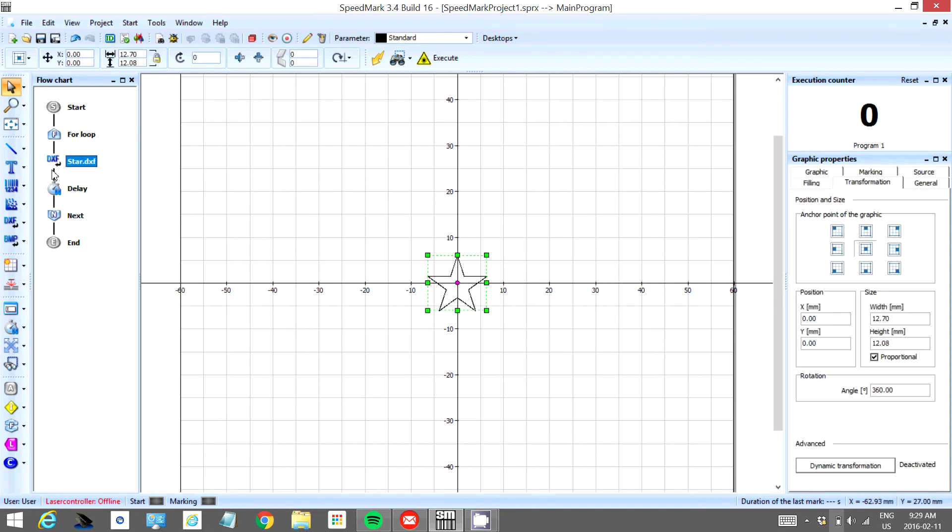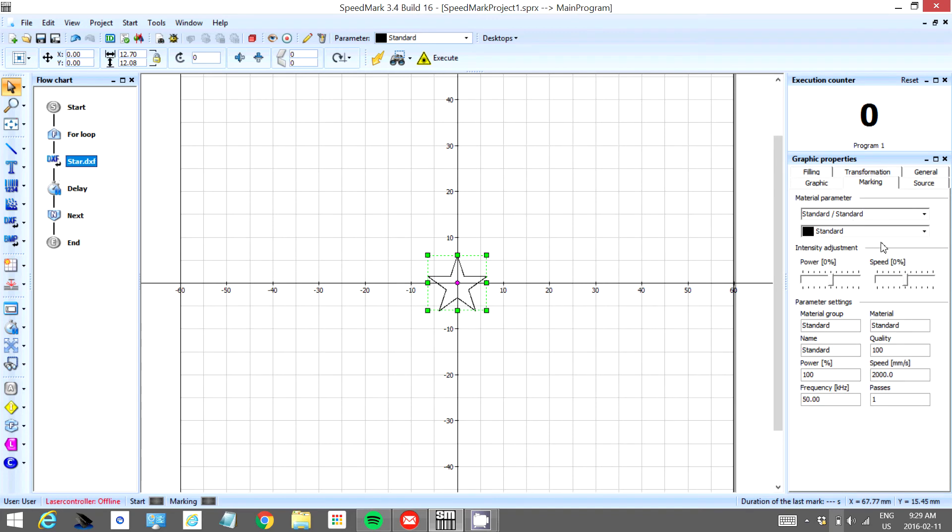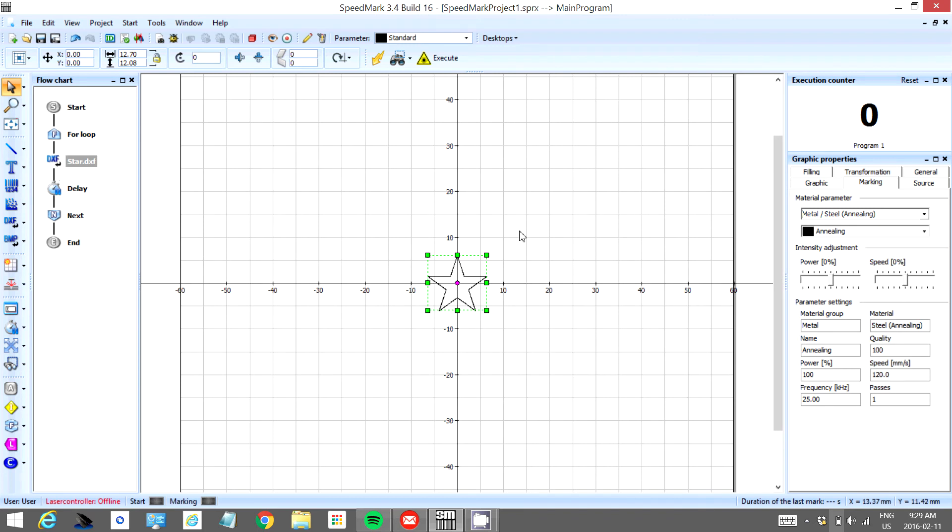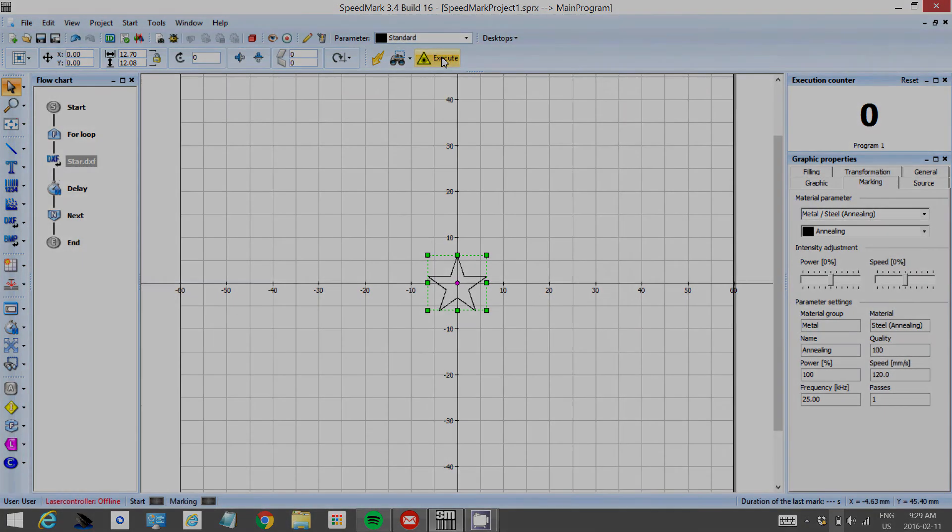But we haven't told it how powerfully to hit the star. So I'm going to select my star, come over here to marking, change it to a very high power setting called steel annealing. Usually this is made for darkening steel, but if you put it right in focus, it does a very good job of cutting. Now all we have to do is hit execute and we're done.